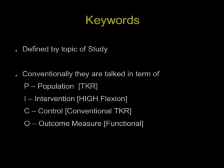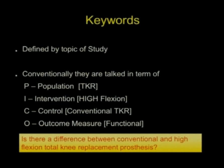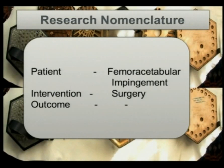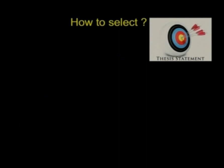We take an example. For example, we want to study, is there a difference between conventional and high flexion total knee replacement in terms of functional outcome? If you take the PICO format for that question, the patient is total knee replacement, intervention is high flexion, control is conventional group, and outcome is the functional outcome. That is the PICO format. If you look at another study where you just want to do a case study of FAI and the surgical outcome, then just the patient and intervention becomes your PICO format.